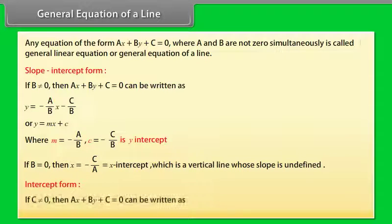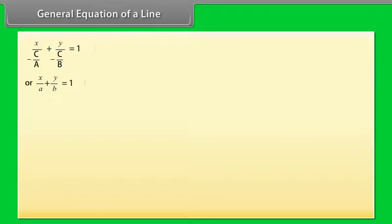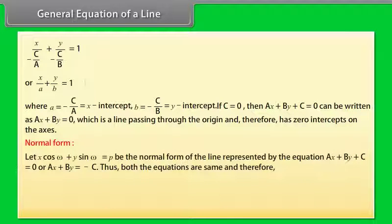Intercept form: If c ≠ 0, then ax + by + c = 0 can be written as x/a + y/b = 1, where the x-intercept a = −c/a and y-intercept b = −c/b. If c = 0, then ax + by = 0 is a line passing through the origin and therefore has zero intercepts on both axes.